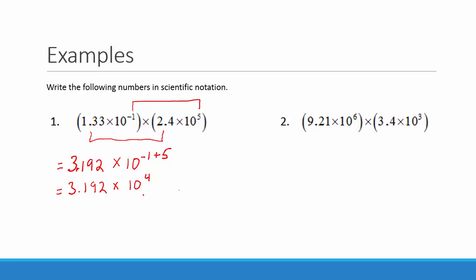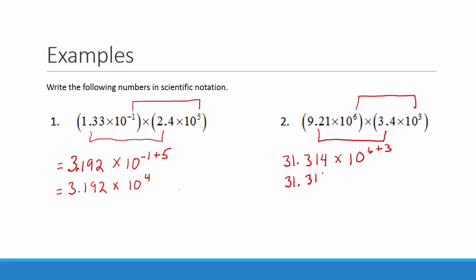Next example. We'll first multiply 9.21 times 3.4 and we get 31.314. Then we will add our exponents on the power of 10 and we get 10 to the 6th plus 3. So we have 31.314 times 10 to the 9th.